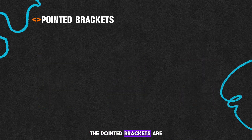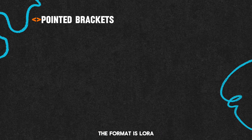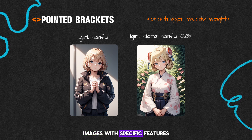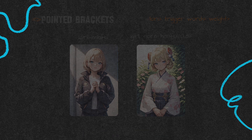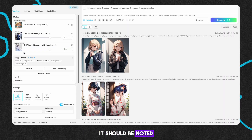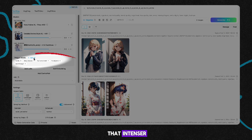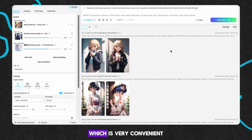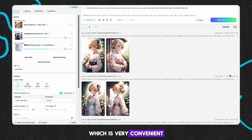The pointed brackets are mainly used to call LoRA. The format is: LoRA, trigger word, weight value. After calling LoRA, images with specific features can be generated. It should be noted that in Tensor, LoRA trigger words can be directly used with one click, which is very convenient.